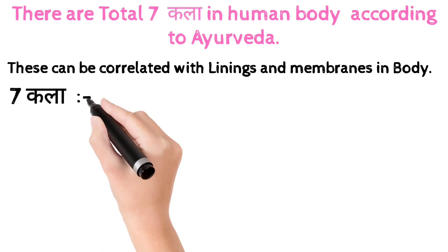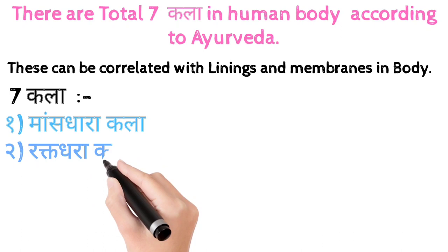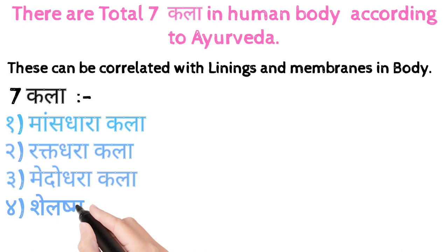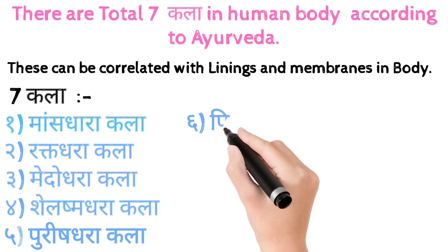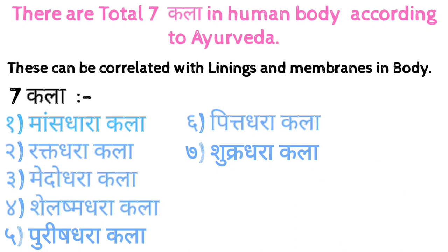The seven Kala are: first is Mash Dharakala, second is Rakta Dharakala, third is Medo Dharakala, fourth is Shleshma Dharakala, fifth is Purish Dharakala, sixth is Pith Dharakala, and seventh is Shukra Dharakala.